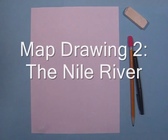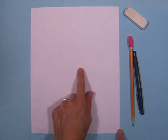This is Map Drawing 2, the Nile River. You need to make sure your paper is going portrait style because it's going to be a long skinny drawing going down the middle. And you'll just need your pencil and your pen and your eraser.